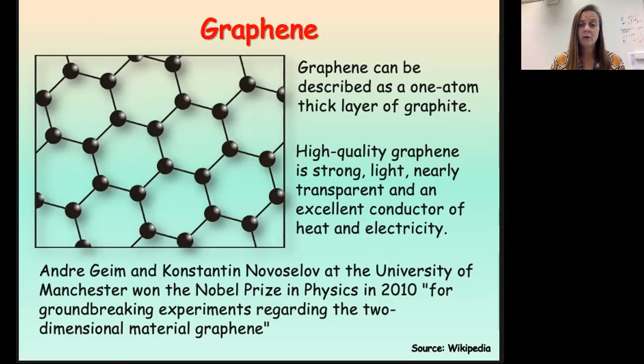When we're thinking about network covalent solids, we want to think about things in the carbon family tend to form network covalent solids. So this would be carbon, silicon, and even to a certain extent, germanium. When we see those three, we want to look and see what they're bonded with to determine whether or not that's a network covalent solid.